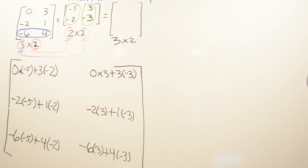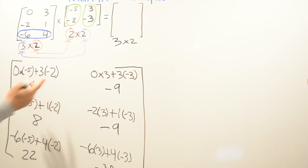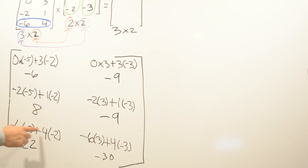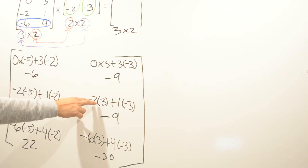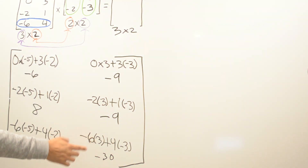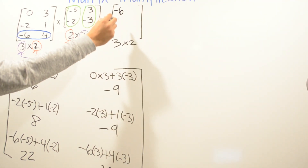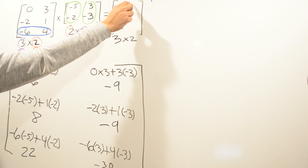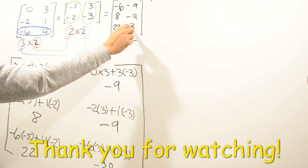Now we go ahead and solve and simplify to get our answers. After multiplying and adding, I got: negative 6, 8, 22, negative 9, negative 9, and negative 30. So the final 3 by 2 result matrix is: negative 6, 8, 22, negative 9, negative 9, and negative 30.